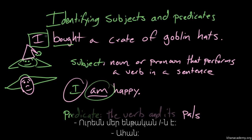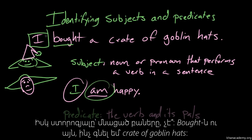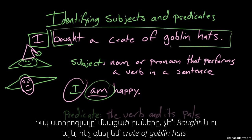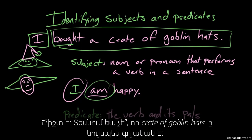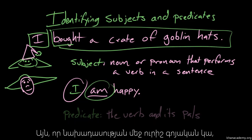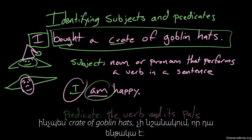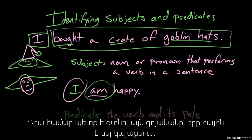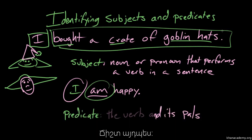So I'm looking for a noun or pronoun that performs a verb in the sentence. I found the verb, and the verb is 'bought.' Who's doing the buying? I am. So our subject is 'I.' And then the predicate is basically everything else, so it's 'bought' — what did I buy? A crate of goblin hats. You can see that 'a crate of goblin hats' is also a noun, but it's not doing anything in the sentence — I am buying. So just because there's another noun in the sentence, like 'crate' or 'goblin hats,' doesn't necessarily mean that it's the subject. You have to look for the thing that is performing the verb.